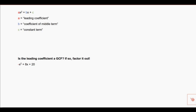Before I get into the strategies I want to make sure you understand a few terms. When I talk about a quadratic equation I'm referring to the equation at the top — we recognize it because it has an x squared. When I say leading coefficient I'm referring to the number in front of that x squared. The number in front of the x is called the coefficient of the middle term, and the number all by itself is called the constant term. We're going to use those two numbers in our factoring, but the first thing we pay attention to is the leading coefficient.